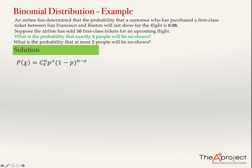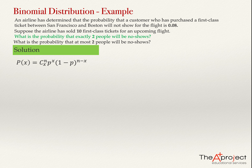The formula for the binomial distribution is: the probability that the random variable takes value x equals C(n, x) times the probability of success to the power x, multiplied by the probability of failure to the power n minus x. In this problem, success means a no-show. Since p equals 0.08, the probability of failure — the customer showing up — is 1 minus p, which is 0.92.